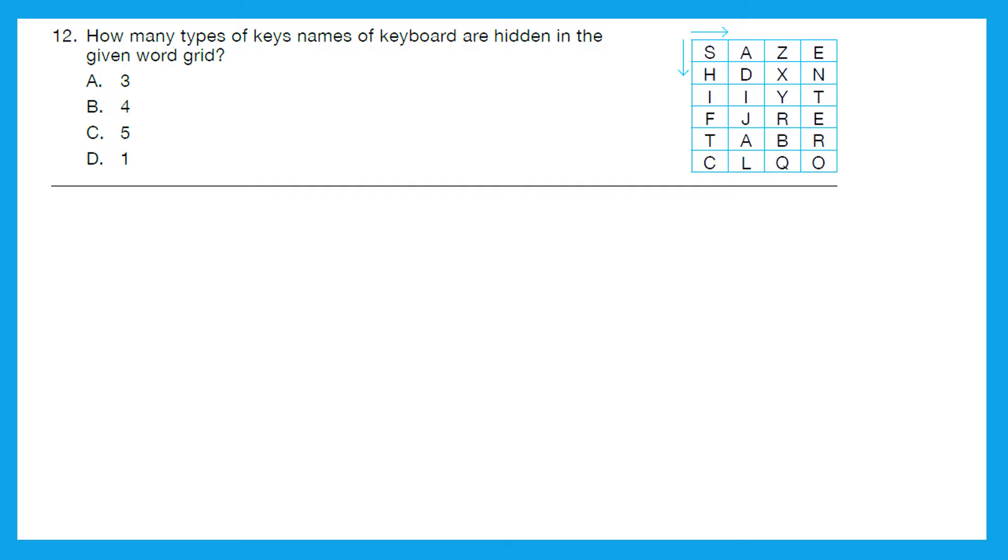Question 12: How many types of keyboard key names are hidden in the given word grid? So first we will go from left to right and then from top to bottom. Let's find out. The first one which I get is tab, it's a tab key. The second one is shift key. The third one I got is enter, and that's all. So we got three key names. So the right answer is option A3.